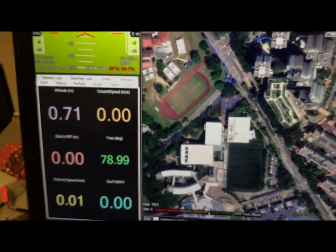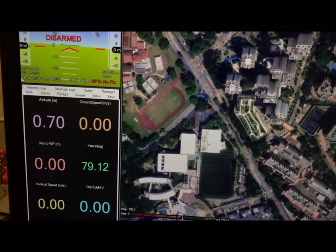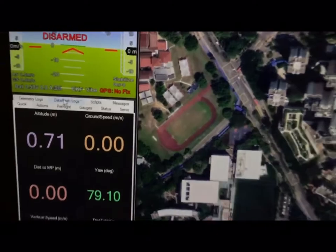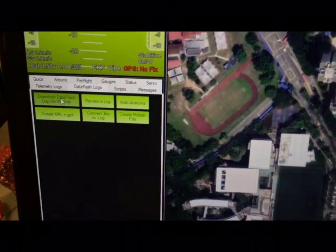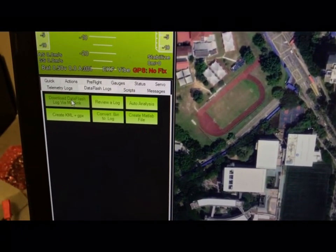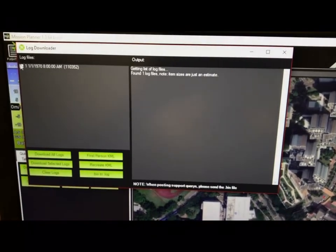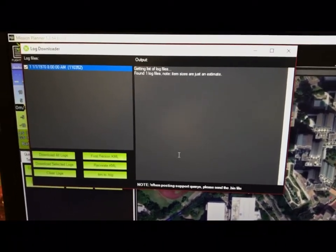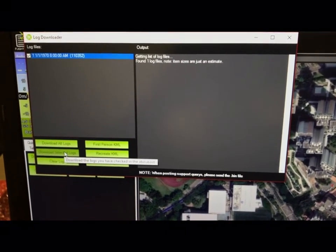Now I'm going to download the log files from the APM by going to data flash logs over here, and then I'm going to click on download data flash. There we go, there's this log, the one and only one. I'm going to click download or select the logs.